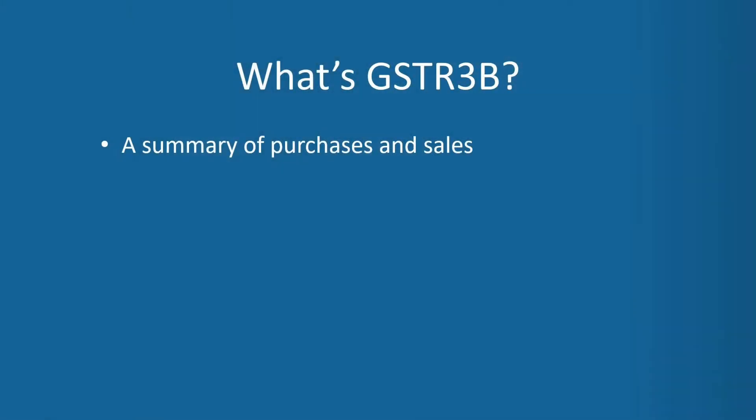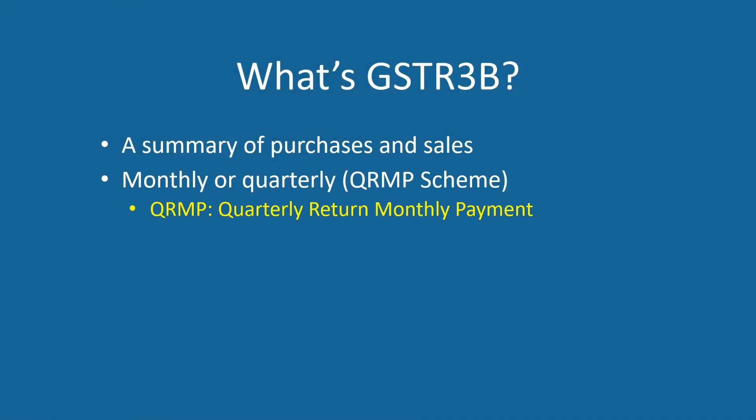GSTR 3B is a summary of purchases and sales. It's required to be filed once a month, but if you have opted for the QRMP scheme, then once in a quarter. Let's now get started.